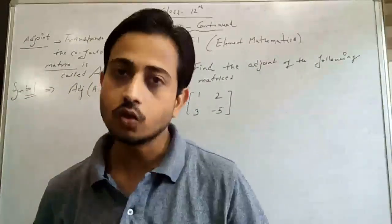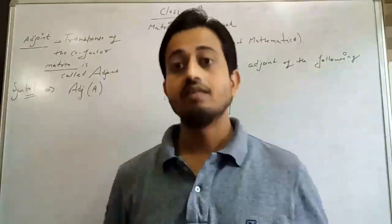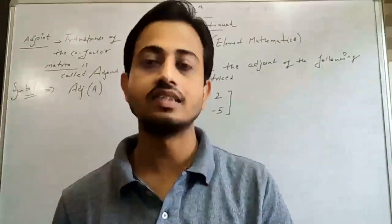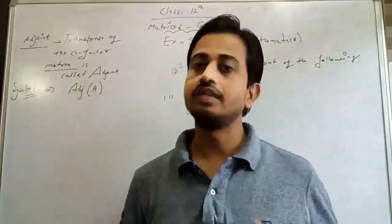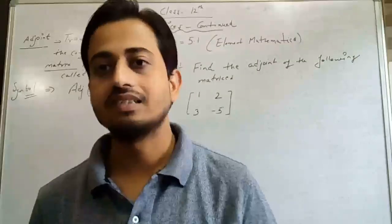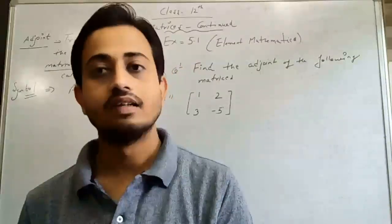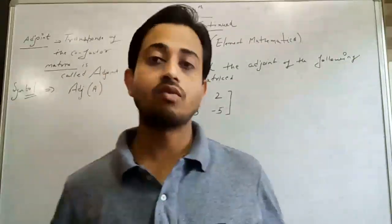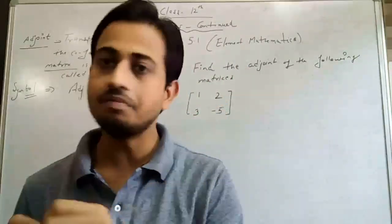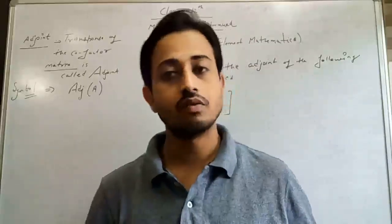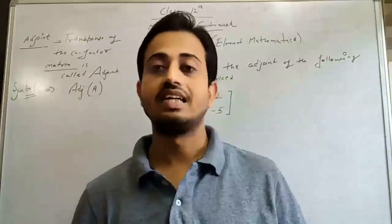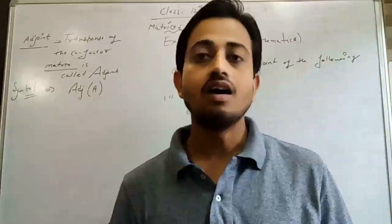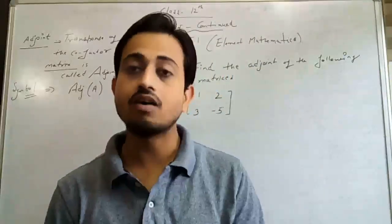I am taking our first topic, which is Adjoint. The first thing you have to learn is what is Adjoint. Adjoint is basically a matrix which is obtained by taking the transpose of the cofactor matrix. So firstly we have to make a matrix of the cofactor elements, and then the second step is to take its transpose. The resulting matrix is called the Adjoint.